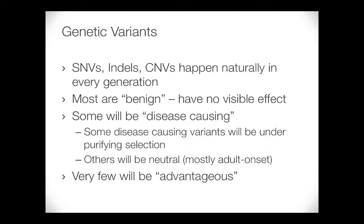For example, a genetic variant that predisposes you to Alzheimer's is not going to be under evolutionary selection because you can still have kids. What happens after you've reproduced is irrelevant as far as evolution is concerned. So variants can be benign or disease-causing, and 'neutral' refers to evolution separately. Very few variants will be advantageous. Can somebody give me an example of a variant that occurred relatively recently that was advantageous? One example offered was a variant against Baghdad — the best known one is lactose tolerance.